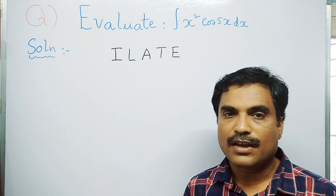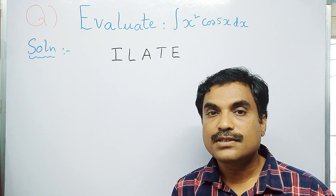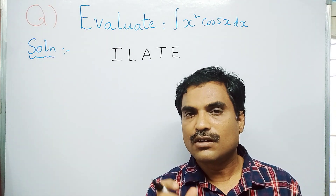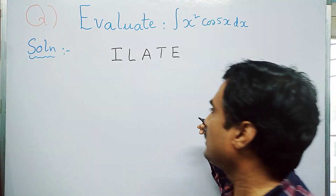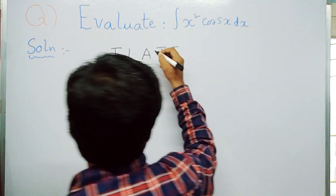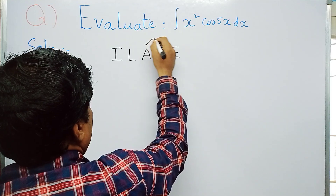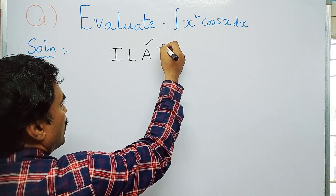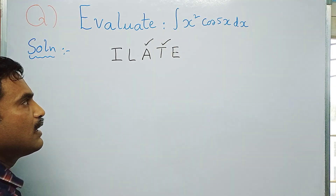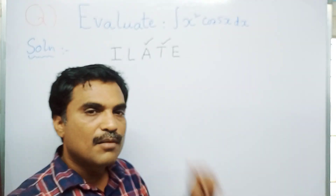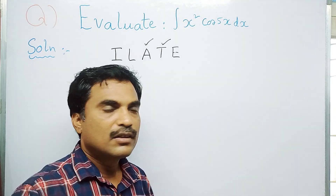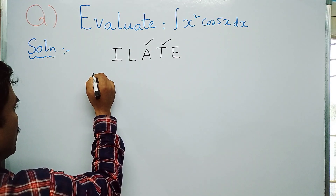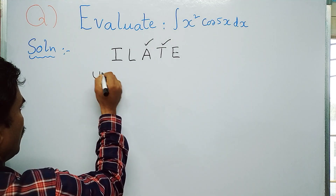x² is an algebraic function, so put a tick under the letter A. cos 5x is a trigonometric function, so put a tick mark under letter T. Since A comes before T, it should be taken as u.